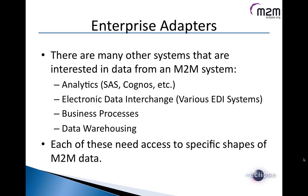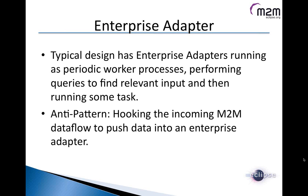Enterprise adapters are another type of worker, typically involved in getting data from the M2M system — collected from devices or outputs of algorithms — and pushing it into other systems. It could be an analytics system like SAS or Cognos, an electronic data interchange system used in many industries for exchanging information, or an internal business process system. Each of these needs access to specific shapes of the M2M data, which is another reason to keep a very simple, flexible schema. These typically run as periodic processes, and you don't want to hook the incoming data flow for this sort of work.